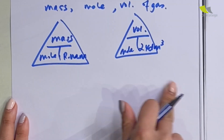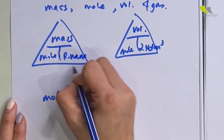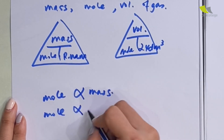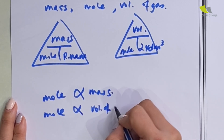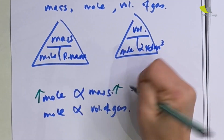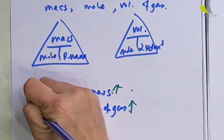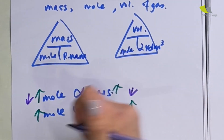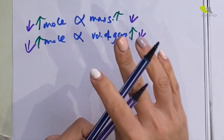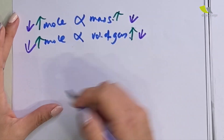From this we can conclude that mole is directly proportional to mass, and mole is also directly proportional to the volume of gas. When mole increases, mass increases; when mole increases, volume of gas also increases. And if mole decreases, mass decreases; when mole decreases, volume of gas also decreases. That is their relationship.